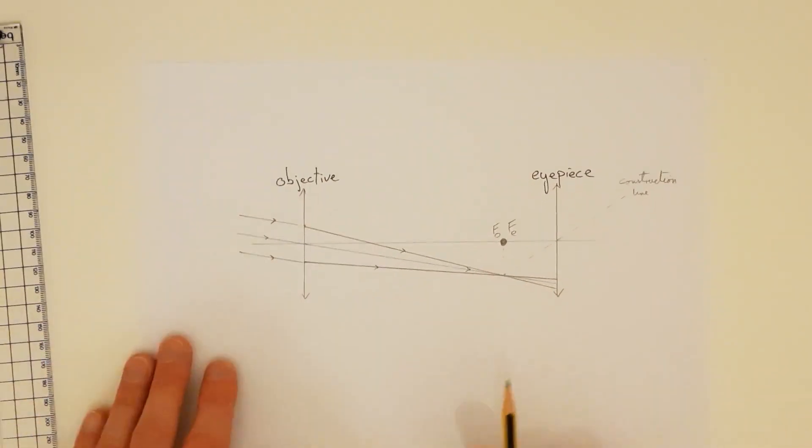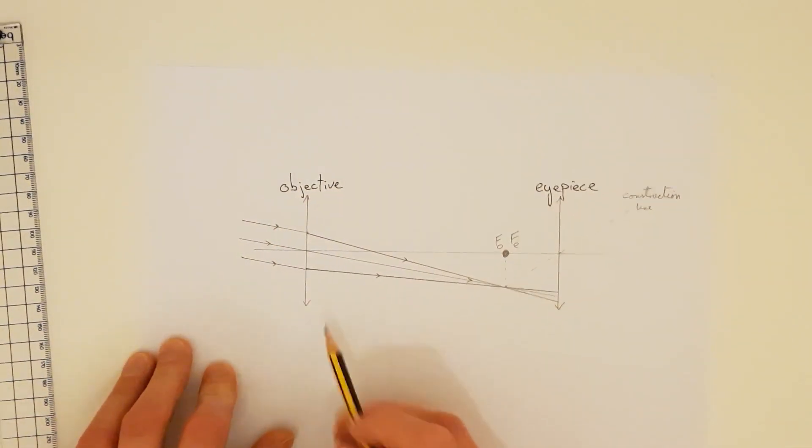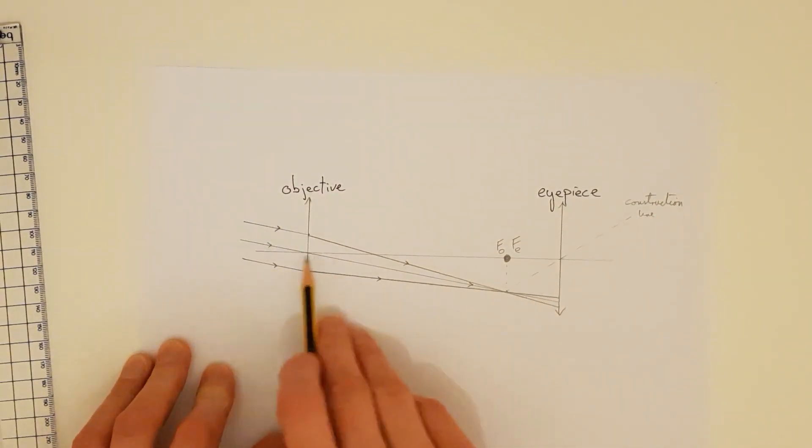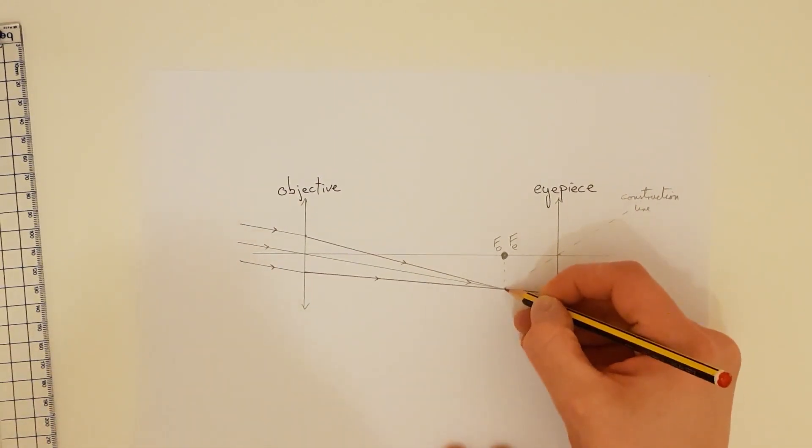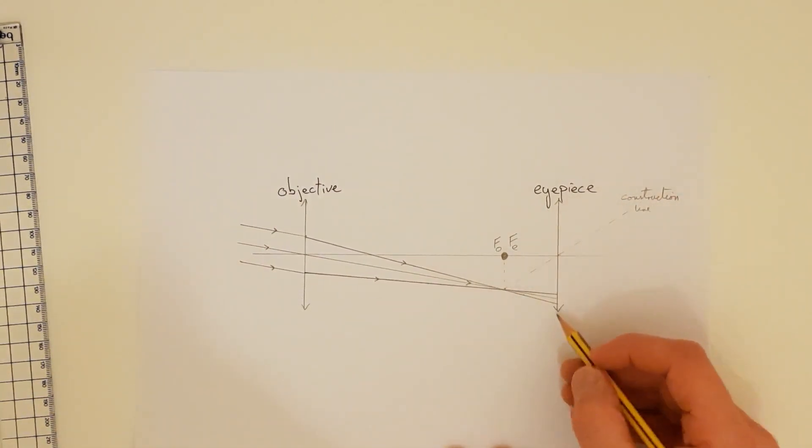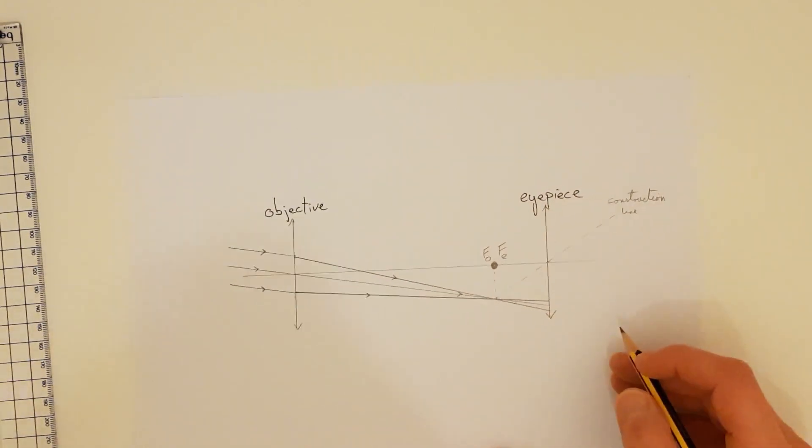And again I may put arrowheads on here just to show that this is the direction. So now I've got my three rays, three non-axial rays there, they are refracting or not in the case of the central ray through the objective lens. They're coming to a focus here, they are forming an intermediate image and now all I need to do is draw them emerging from this eyepiece lens.